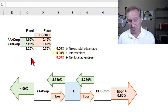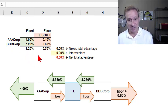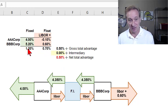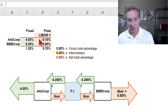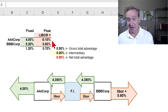This example follows John Hull's example in chapter 7, where we have two counterparties: AAA Corp, which is the higher credit quality company that pays a lower interest rate in capital markets, and BBB Corp, the lower credit quality who pays a higher interest rate. In fixed rate markets, AAA Corp pays 4% and BBB Corp pays 5.2%. In floating rate markets, AAA Corp pays LIBOR minus 10 basis points and BBB Corp pays LIBOR plus 60 basis points.